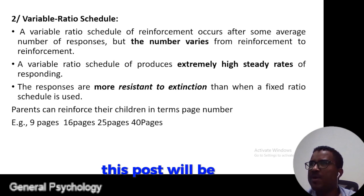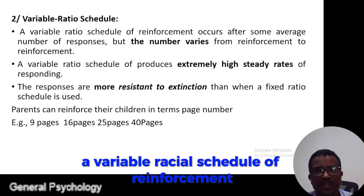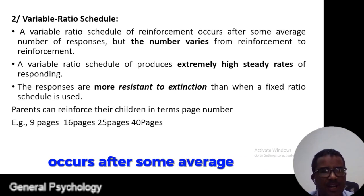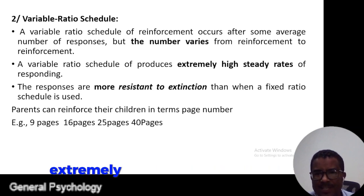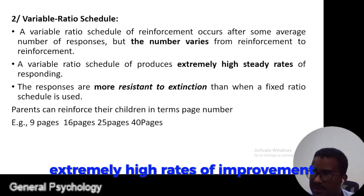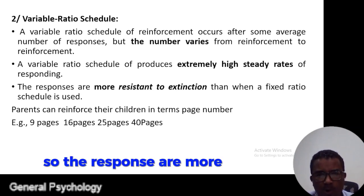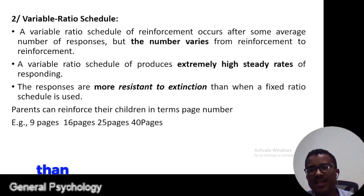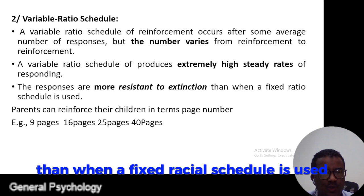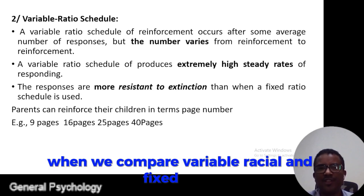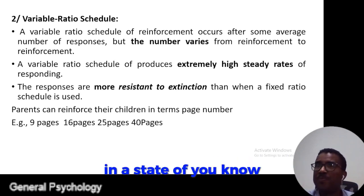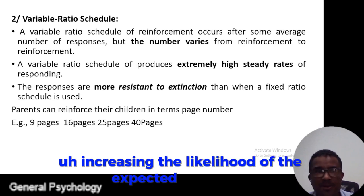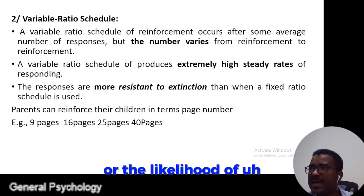The second type is the variable ratio schedule. The response will be varied. A variable ratio schedule of reinforcement occurs after some average number of responses, but the number varies from reinforcement to reinforcement. A variable ratio schedule produces extremely high rates of improvement, and responses are more resistant to extinction than when a fixed ratio schedule is used. Variable ratio is more productive than fixed ratio in increasing the likelihood of the expected behavior.